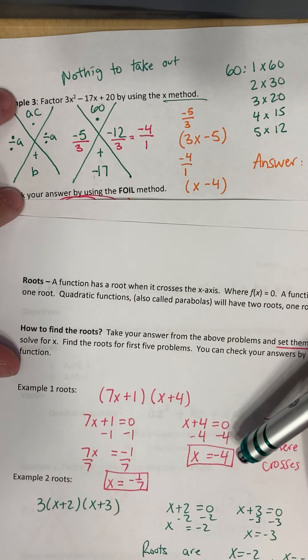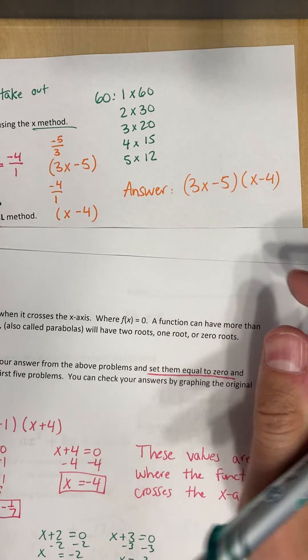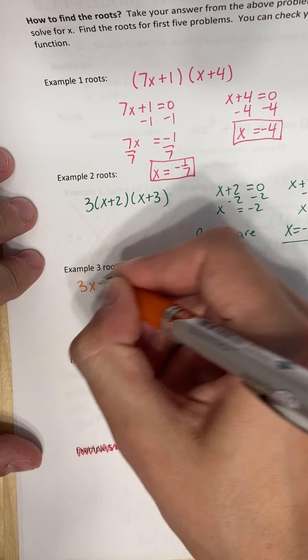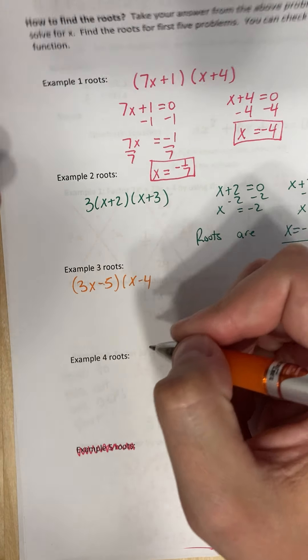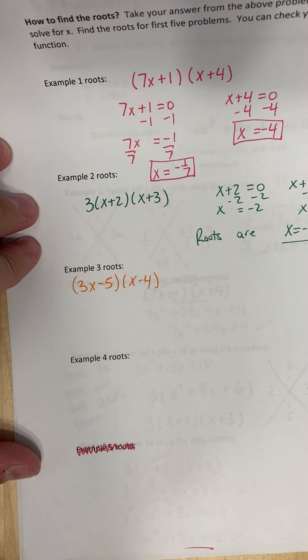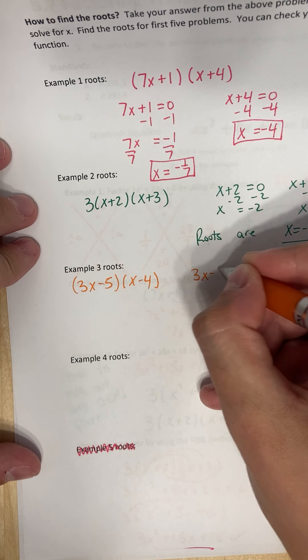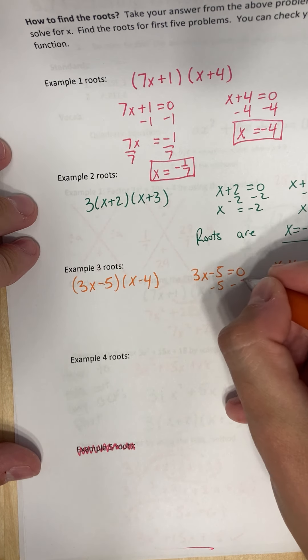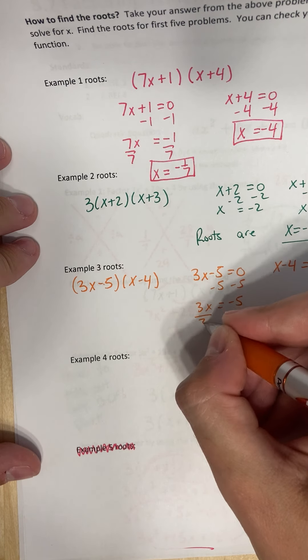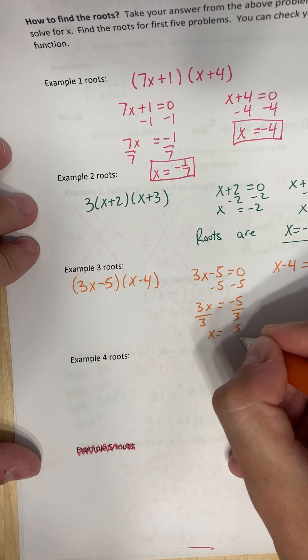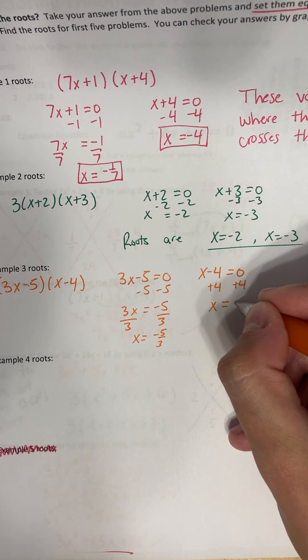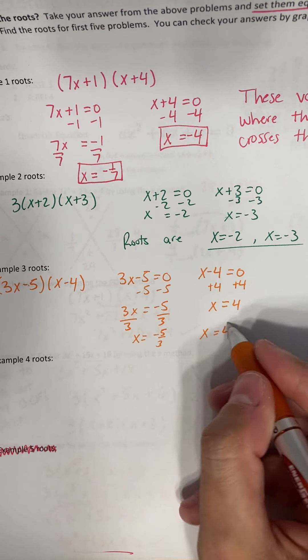Let's look at example three. Example three, we had this one right here, three x minus five x minus four. Let's use orange again. So three x minus five, x minus four, was that right? Yeah. So now we can set three x minus five equal to zero, and x minus four equal to zero. So minus five, we get three x is equal to negative five, divide by three, divide by three, x is equal to negative five thirds. And for this one, plus four, plus four. So x is equal to four. So these are our roots.